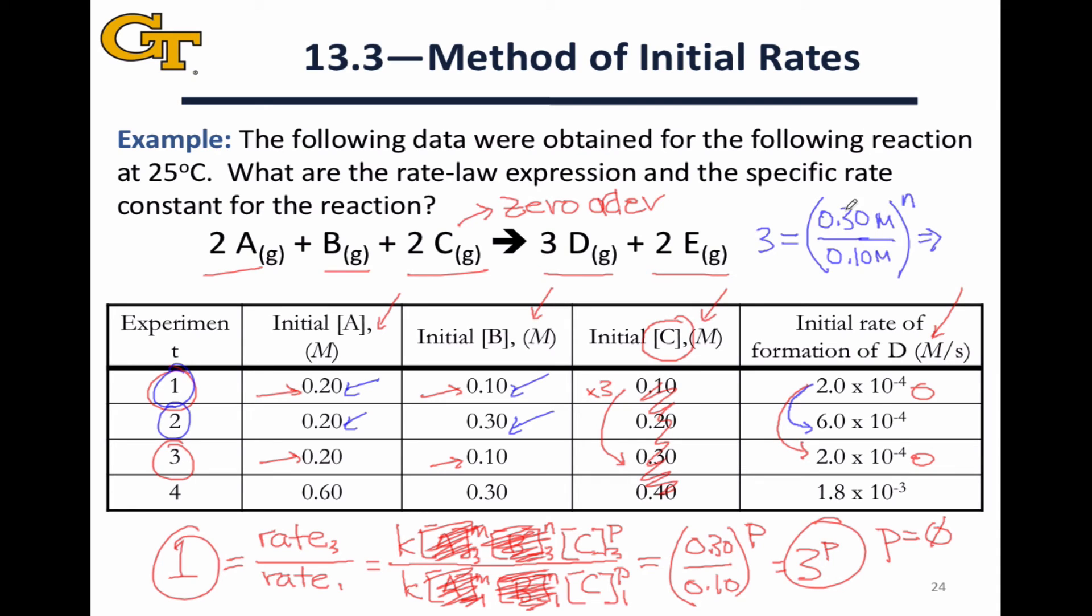Hopefully you can see from this that this ratio is simply 3. 3 equals 3 to the n power means that n is equal to 1 and what we can say about reactant B is that it is first order in this reaction. It has an order equal to 1.